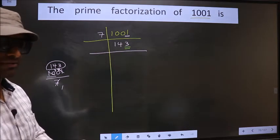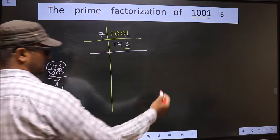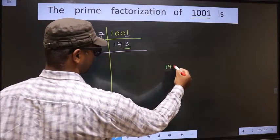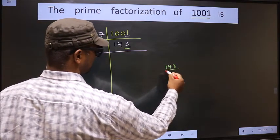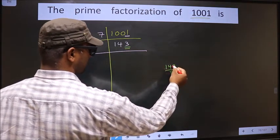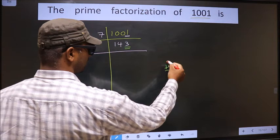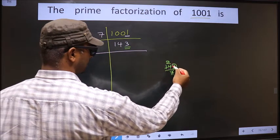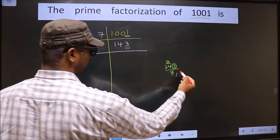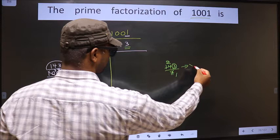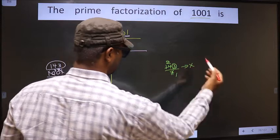Let us check 143 for divisibility by 7: 143 divided by 7. 7 goes into 14 twice, but we don't get 3 in the 7 table exactly, so this is not divisible by 7.